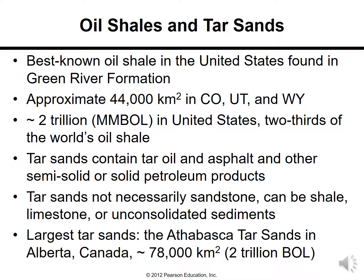The best known oil shale in the United States is found in the Green River Formation — approximately 44,000 square kilometers in Colorado, Utah, and Wyoming — representing nearly 2 trillion barrels and two thirds of the world's oil shale. Tar sands contain tar, oil, asphalt, and other semi-solid or solid petroleum products, and are not necessarily sandstone — they can be shale, limestone, or consolidated sediments.